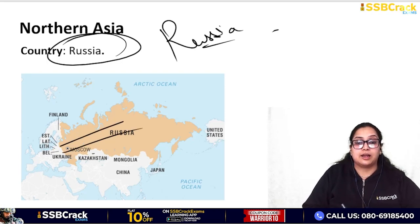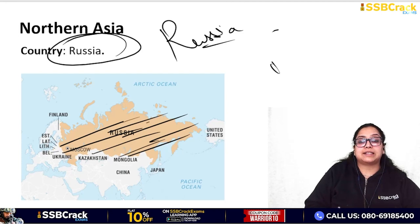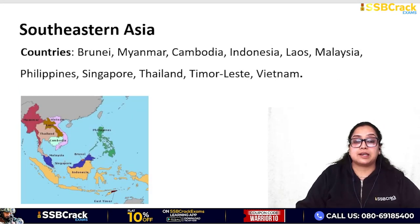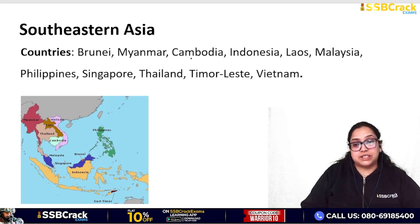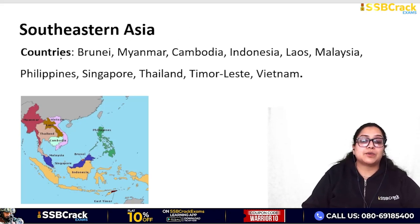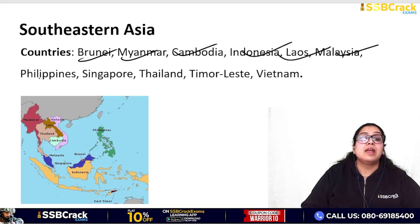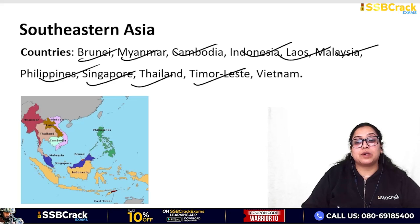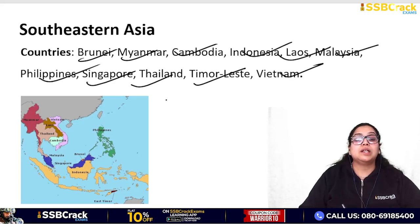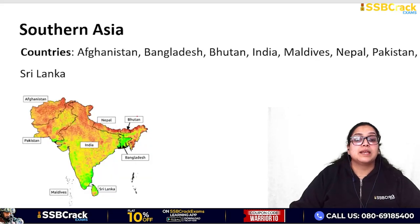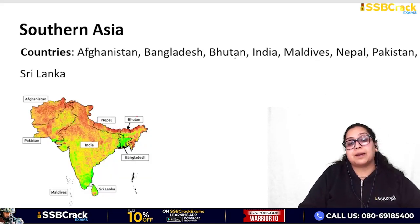Northern Asia has only one country - Russia - because Russia alone is so large that it covers the entire northern part by itself. South-East Asia includes Brunei, Myanmar, Cambodia, Indonesia, Laos, Malaysia, Philippines, Singapore, Thailand, Timor-Leste, and Vietnam. These are all the countries which come under South-Eastern Asia.